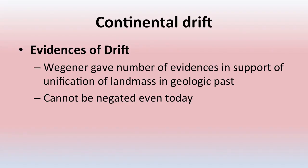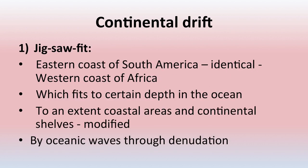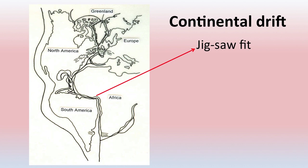What are the evidences of this continental drift? Wegener gave a number of evidences in support of the unification of landmasses in the geological past. The first evidence is the Jigsaw fit — the eastern coast of South America can be seen to be identical to the western coast of Africa, which fits to a certain depth in the ocean. As you can see in the figure, both parts of Africa and South America can be fit together.